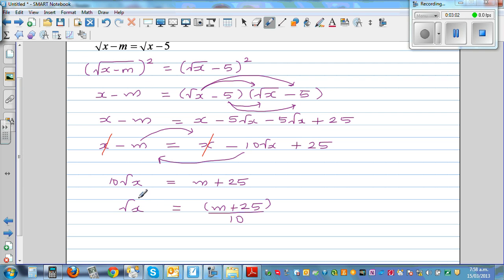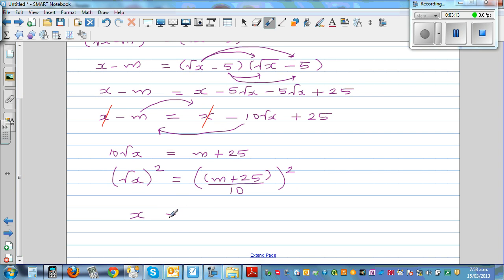Now I want to find x. So what should I do? I should square this side, so I also square this side. This is x equals - this becomes m plus 25 the whole squared, m plus 25 the whole squared over 100.